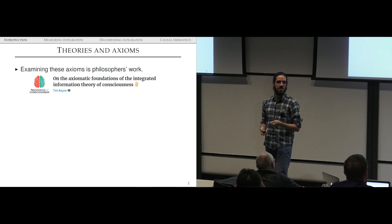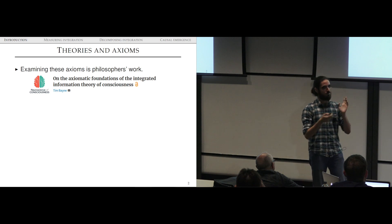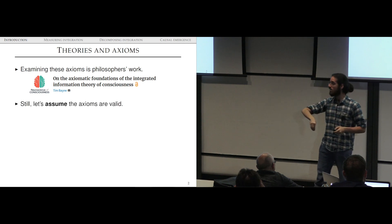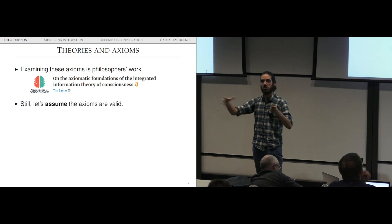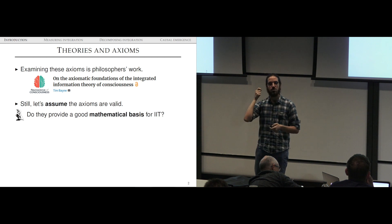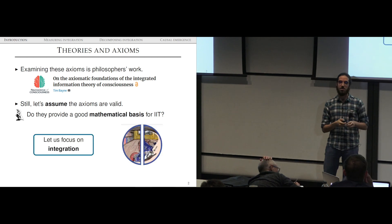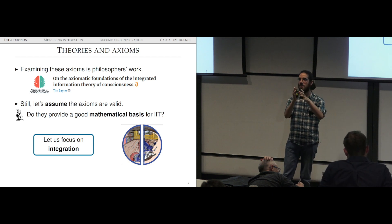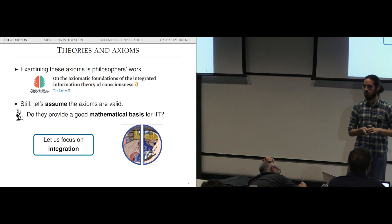So the axiomatic basis of IIT is in itself up to debate. There's this paper by Tim Bayne in Neuroscience of Consciousness some time ago. But what I'm going to do for the purpose of this talk is I'm going to assume the axioms are valid, that they describe what we want to describe by phenomenology. And I'm going to ask, do they provide a valid mathematical basis for IIT? In particular, I'm going to be talking about the axiom of integration. Of this notion that you have some process, neural or physical or otherwise, and that you can cut it in half. And then cutting it in half tells you to what extent these two things are integrated.